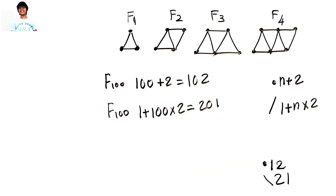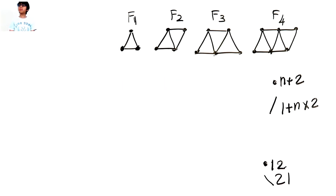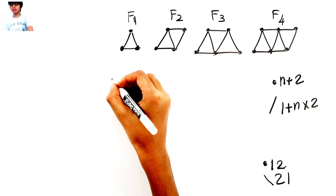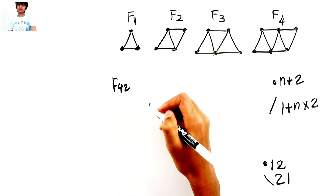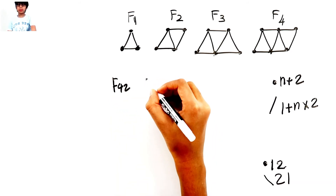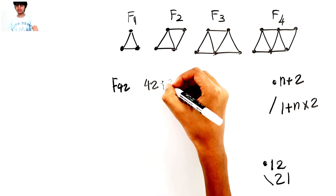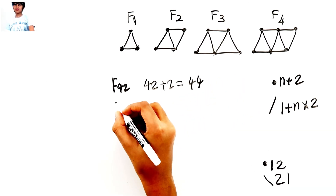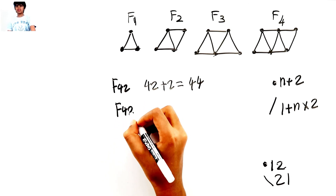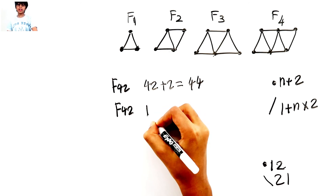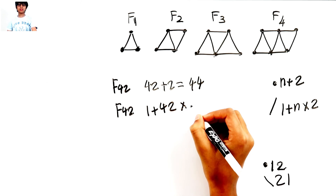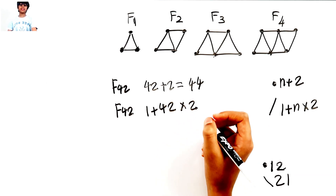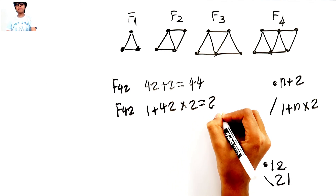Let's try another number. What if someone asked for figure 42? For the dots, put 42 in place of n: forty-two plus two is 44. For the lines: one plus forty-two times two. Forty-two times two is eighty-four, and eighty-four plus one is 85. So figure 42 has 44 dots and 85 lines.